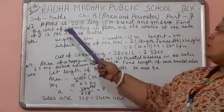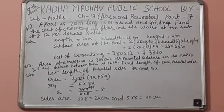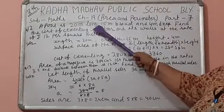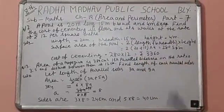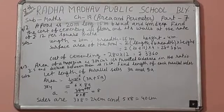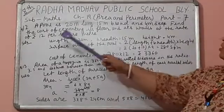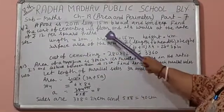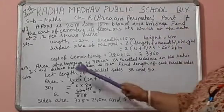Like this, a pool. A pool is 20 meters long—pool means swimming pool—20 meters long, 15 meters broad, and 4 meters deep. It's just like a cuboid. Find the cost of cementing its floor and walls at the rate of 12 rupees per square meter.